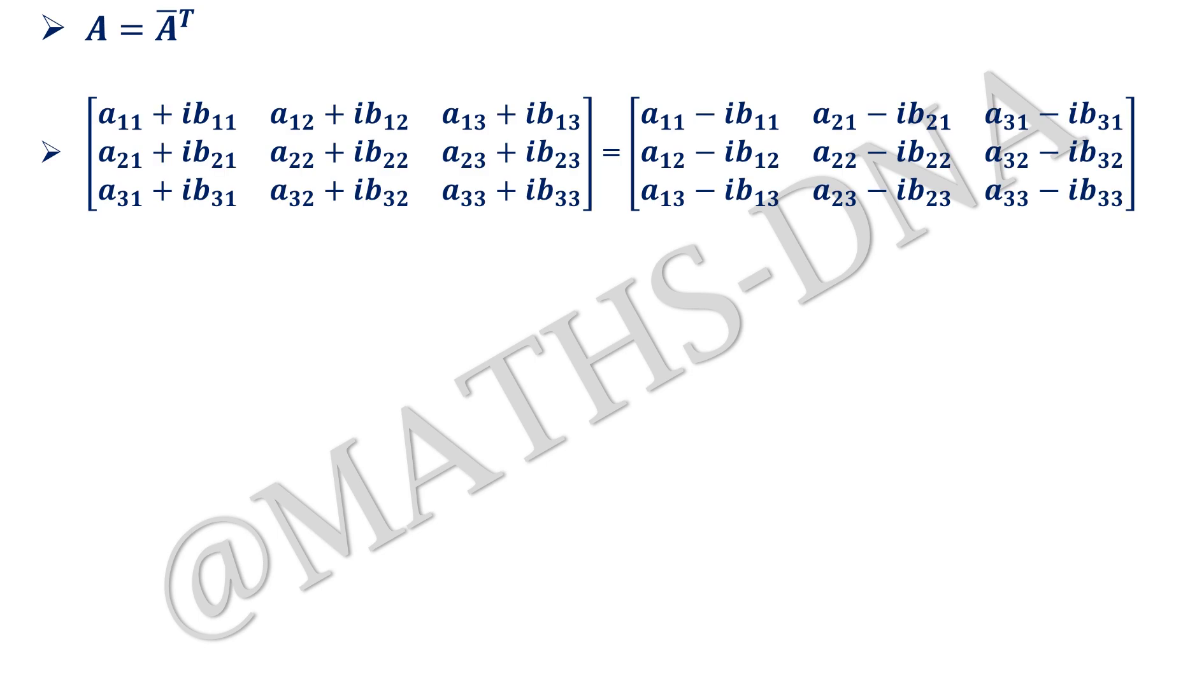Then as we have to take both of them to be equal, let us take them equal. That gives us a₁₁ + ib₁₁ is equal to a₁₁ - ib₁₁. The diagonal entries will be almost same: a₂₂ + ib₂₂ = a₂₂ - ib₂₂, a₃₃ + ib₃₃ = a₃₃ - ib₃₃. From here we can conclude that b₁₁ will be 0, similarly b₂₂.